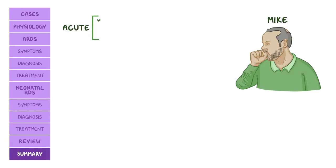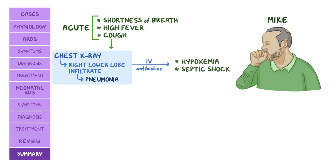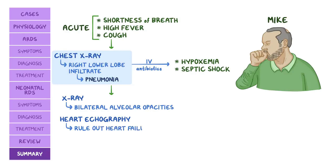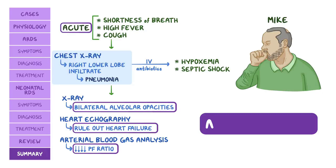Back to the cases: Mike presents with acute onset of shortness of breath, high fever, and cough. A chest x-ray showing a right lower lobe infiltrate led to a diagnosis of pneumonia, and he was started on IV antibiotics. The next day he developed hypoxemia and septic shock. Newly developed bilateral alveolar opacities, heart echography ruling out heart failure, and a severely decreased PF ratio meant Mike met all four criteria for an ARDS diagnosis.